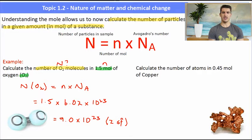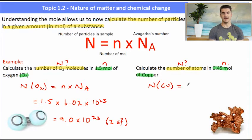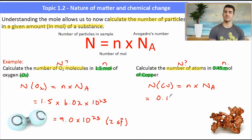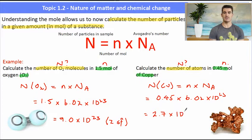Calculate the number of atoms in 0.45 mole of copper. We want big N, the number of atoms. We've been given an amount in mole. So big N(Cu) equals n times Nₐ. Sub in our value for moles: 0.45, again two significant figures. Multiply by Avogadro's number, and we answer to two significant figures, doing our rounding before writing the answer: 2.7 times 10 to the 23 atoms.